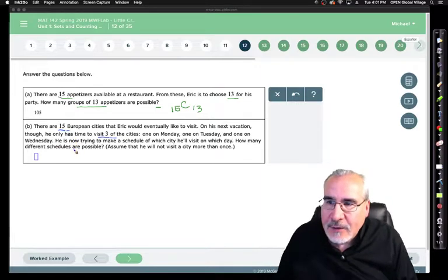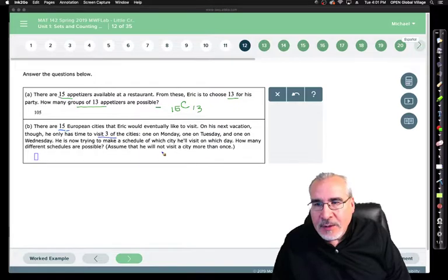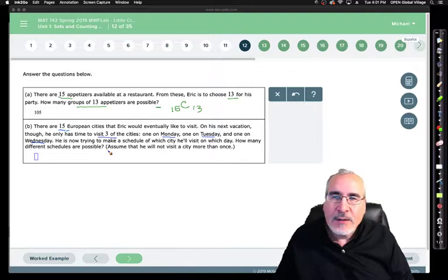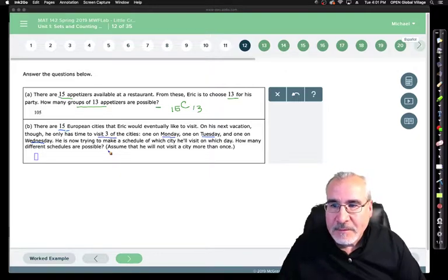So I guess you can get to the cities quickly. He's now trying to make a schedule of which cities he'll visit on which day. How many different schedules are possible? Now remember, you can only do one city, and so there is an order that's important because there's a first visit, a second, and a third on particular days. Your experience, depending upon which city you see on which day, is going to be different.